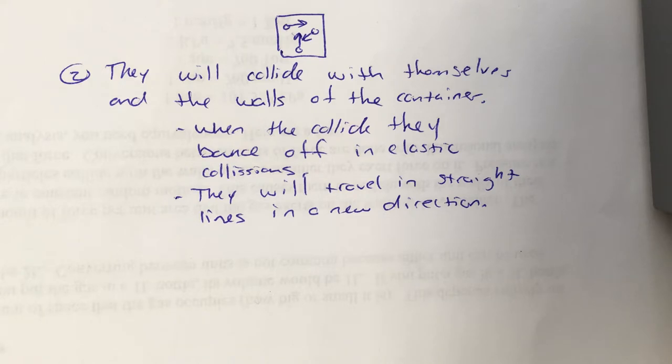So again, after it hits the wall, it's going to bounce off the wall and go in a straight line in some new direction based on the angle at which it hit the wall. When they hit each other, they're going to bounce off each other. They're going to travel in straight lines in a direction based on how that collision occurred, how they ran into each other.